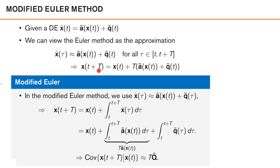This assumption greatly simplifies our problem. The prediction of X(t+T) is simply the previous state X(t) plus T times the time derivative of X at the start of the interval. For the modified Euler method, we use the same approximation for the nonlinear part — that's the nonlinear function of X(t) — but we use the actual expression for the noise term, since that turns out to be quite simple to handle. We get X(t+T) = X(t) plus the integral from t to t+T of the time derivative, which for the noise term gives an integral over q̃ rather than just T times the constant q̃(t).